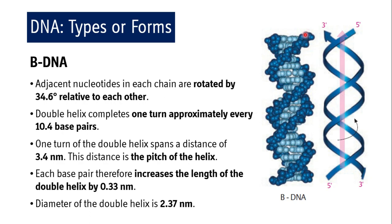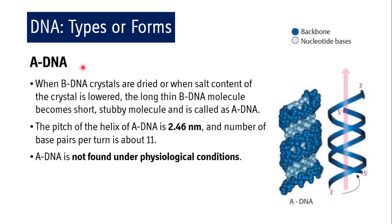One turn of the B-DNA double helix spans a distance of 3.4 nanometers — also called the pitch of the helix. Each base pair increases the length of the double helix by 0.33 nanometers. The diameter of the double helix is 2.37 nanometers. The conformation of DNA has been determined by X-ray crystallography, and by far the most common type is B-DNA.